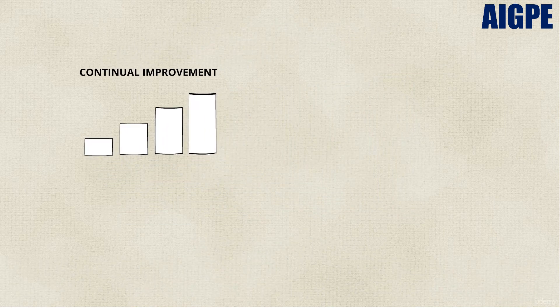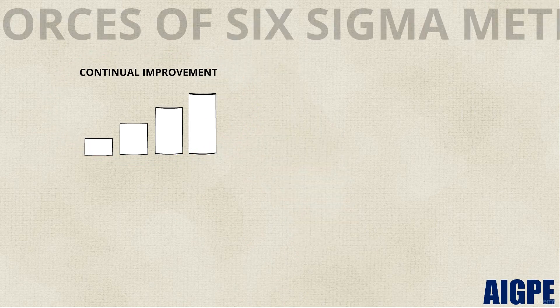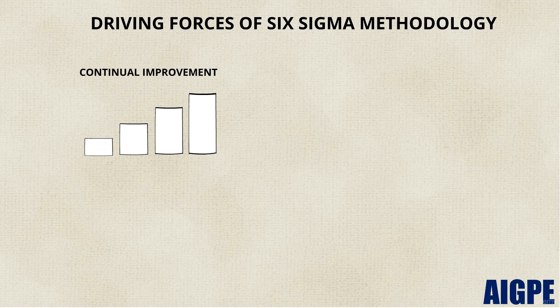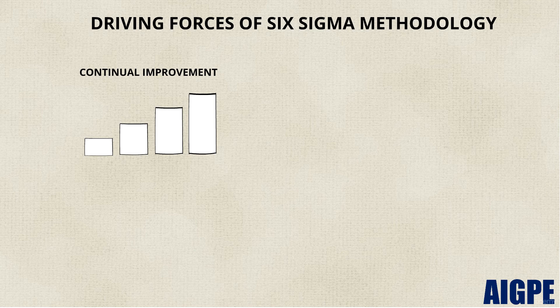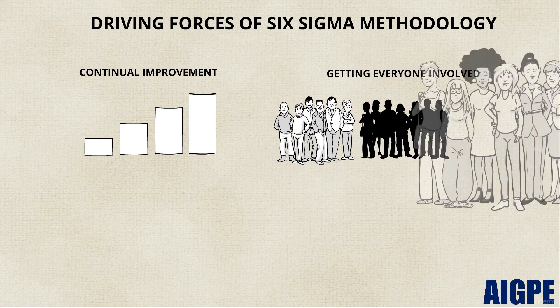Thus, continual improvement is one of the driving forces that makes Six Sigma different from other quality improvement programs. The other driving forces include getting everyone in the organization involved.